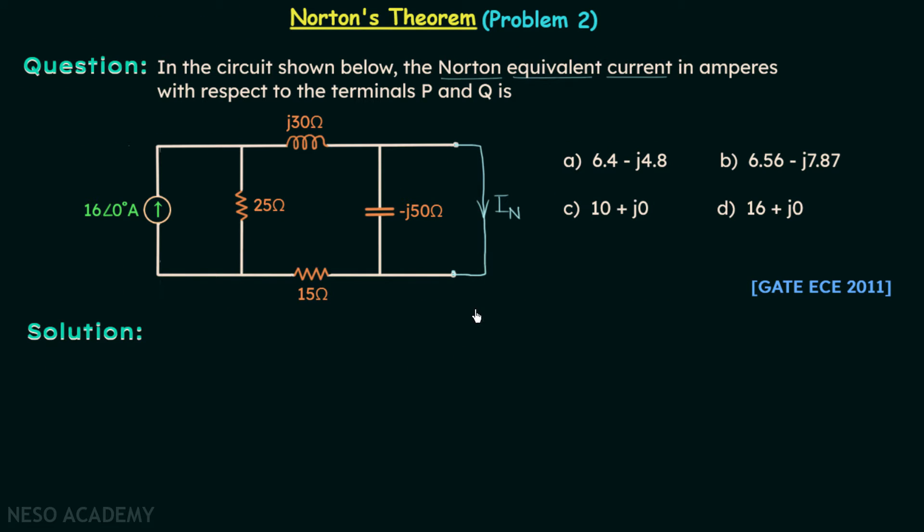Now when you focus on this capacitor, you will find it is short circuited and therefore it will not offer any reactance to the current flow, so we will remove it. Now you can see that this inductor and this resistor are in series, and after that their equivalent is in parallel with the 25 ohm resistor.